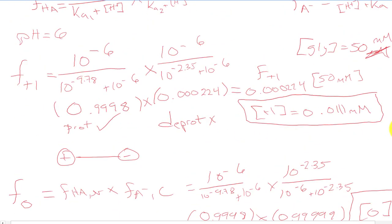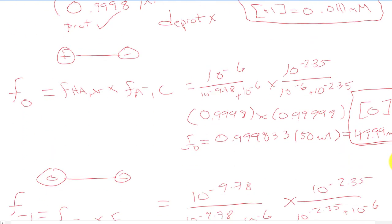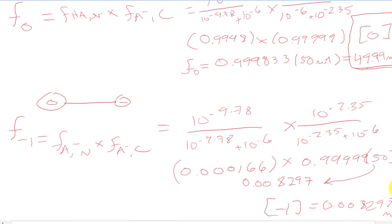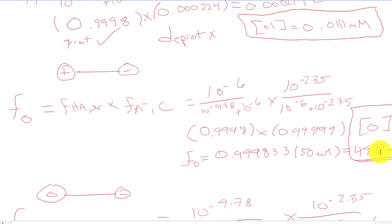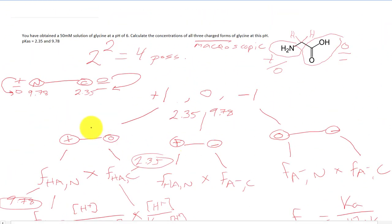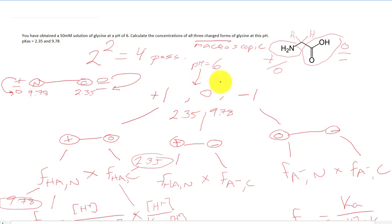So our three concentrations are: +1 form = 0.011 millimolar, 0 form = 49.99 millimolar, and −1 form = 0.083 millimolar. The predominant form is the isoelectric (neutral) form. This makes sense because at pH 6 we are squarely between the two pKa values of 2.35 and 9.78, meaning we are in the region where the zwitterionic zero form dominates. A large concentration of zeros is exactly what we'd expect.